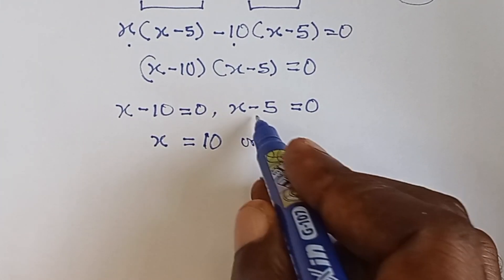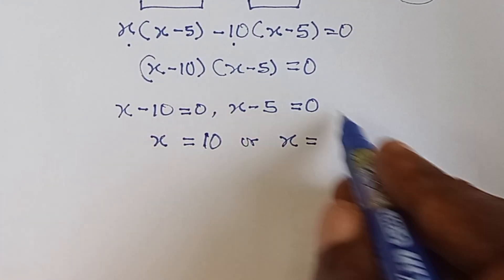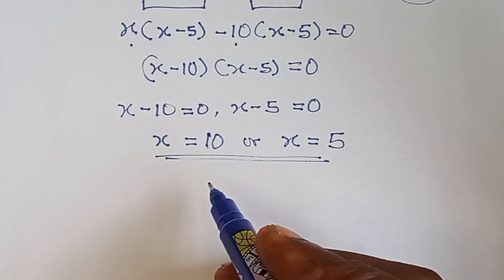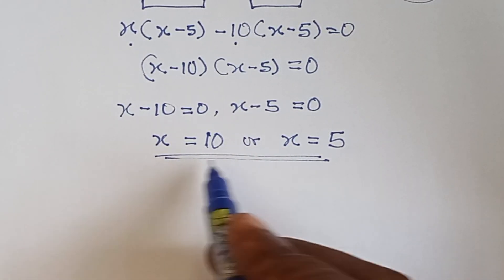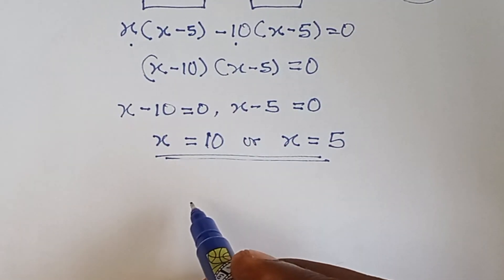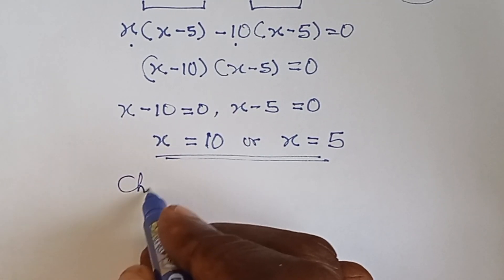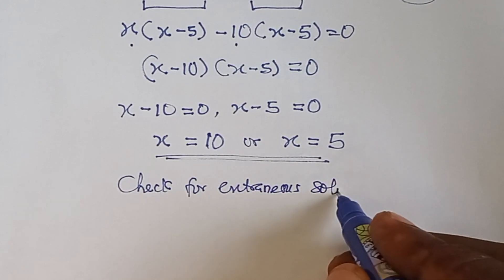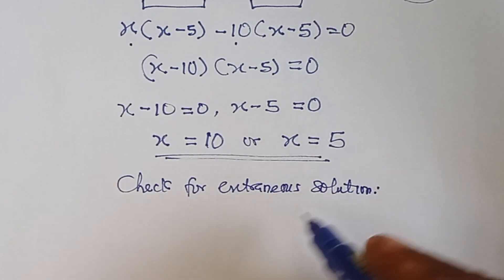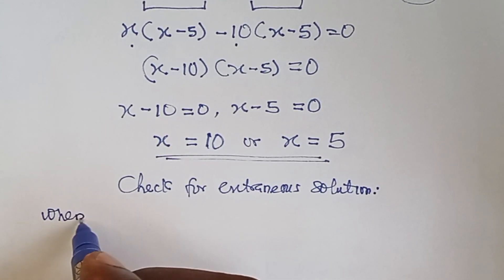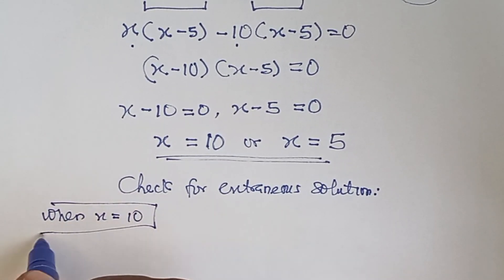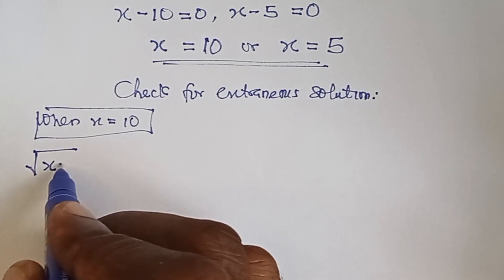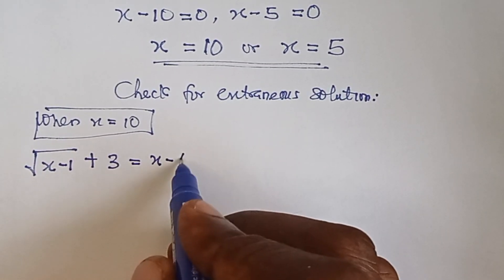Now we have to check for extraneous solutions — let's see if the values of x we got actually work in the original equation: square root of x minus one plus three equals x minus four. Let's check when x equals ten.